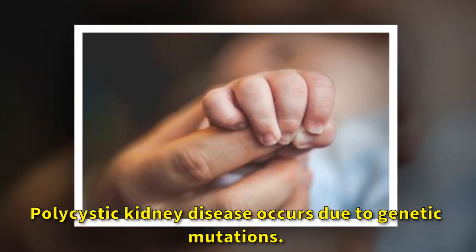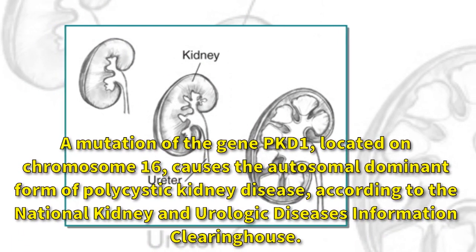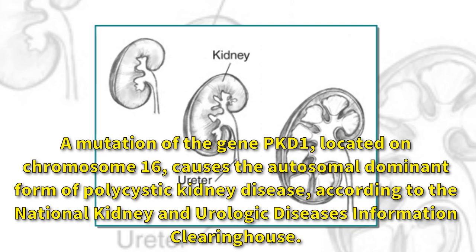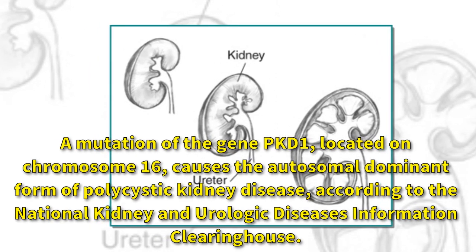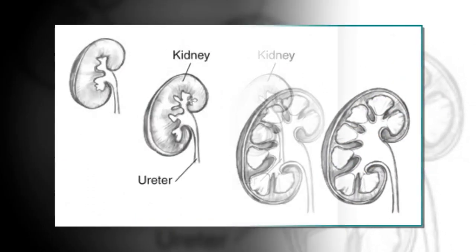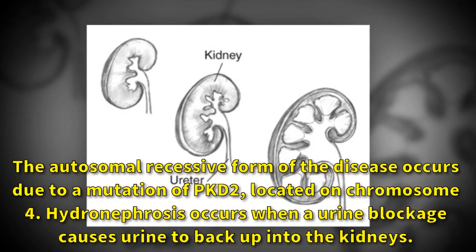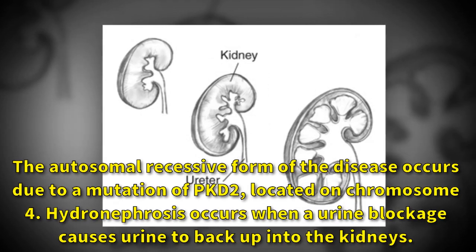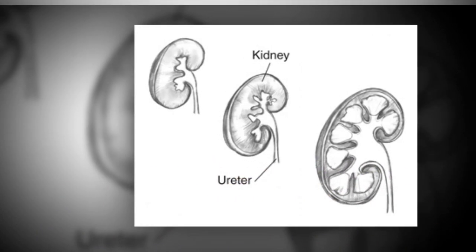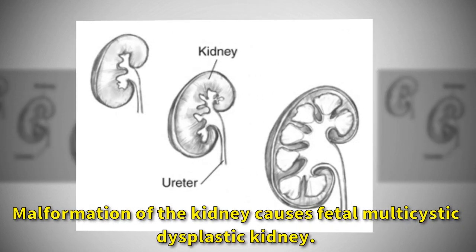Polycystic kidney disease occurs due to genetic mutations. A mutation of the gene PKD1, located on chromosome 16, causes the autosomal dominant form of polycystic kidney disease, according to the National Kidney and Urologic Diseases Information Clearinghouse. The autosomal recessive form of the disease occurs due to a mutation of PKD2, located on chromosome 4. Hydronephrosis occurs when a urine blockage causes urine to back up into the kidneys. Malformation of the kidney causes fetal multicystic dysplastic kidney.